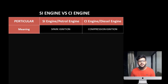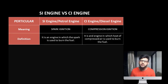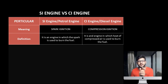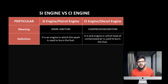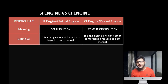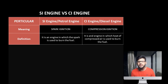The second point is definition. The definition of SI engine: it is an engine in which the spark is used to ignite the fuel — so it is called a spark ignition engine. And what is a CI engine? In CI engine, the heat of compressed air is used to burn the fuel. So that is the major and basic difference, which we can understand from the definitions.